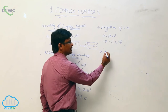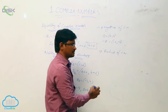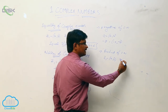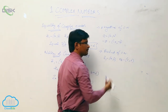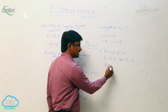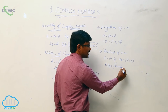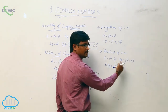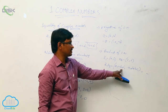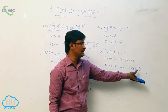Next, product of complex numbers. Let two complex numbers be considered: Z1 equal to A comma B, and Z2 equal to C comma D. Then the product of these two complex numbers is denoted by Z1 into Z2 and is defined as AC minus BD comma AD plus BC.